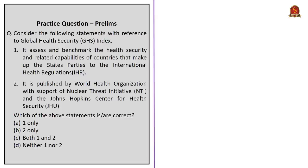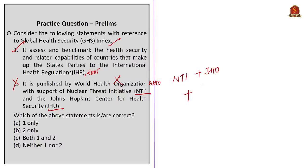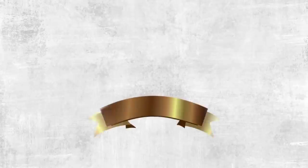Consider the following statements with reference to Global Health Security Index. Statement 1: It assesses and benchmarks the health security and related capabilities of countries that make up the state parties to International Health Regulations. This statement is correct. Statement 2: It is published by World Health Organization with support of Nuclear Threat Initiative and Johns Hopkins Center for Health Security. This statement is incorrect since WHO is not associated with publishing this report. The index is a project of Nuclear Threat Initiative and Johns Hopkins Center for Health Security, developed with the Economist Intelligence Unit and not WHO. Therefore the correct answer is option A, one only. Thank you.